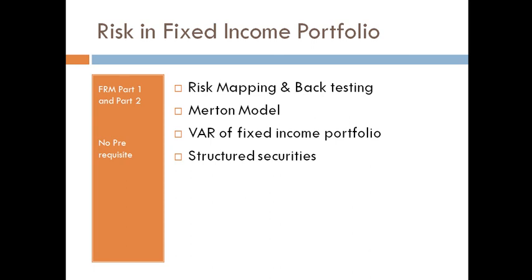When you look at the risk of a fixed income portfolio, you have to map those risks and factors to find out value at risk. Value at risk of a portfolio of fixed income can then be calculated. There are also structured securities where you have to find out what will happen with prepayment. The highest-rated tranche receives the first payment, it flows down to the next tranche, and the equity of the last or support tranche is generally held by the bank.